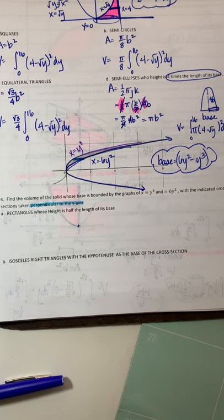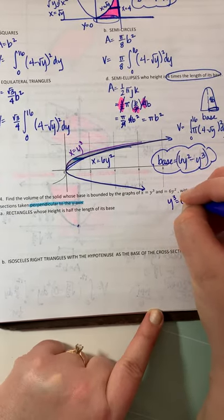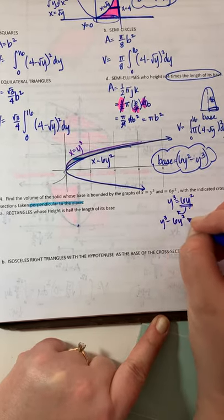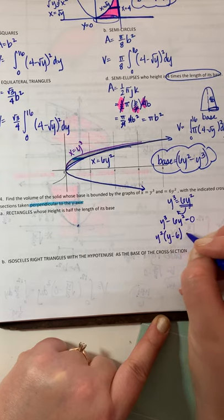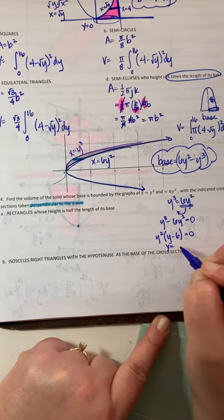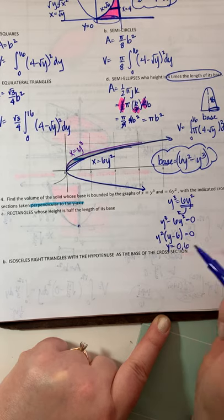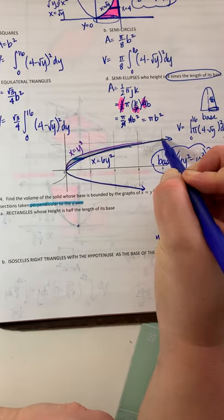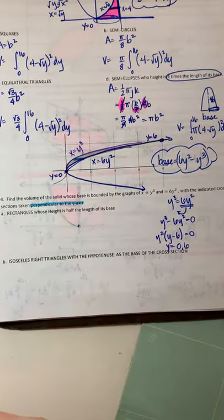Find the intersection points by setting y cubed equal to 6y squared. Bring everything to the left: y cubed minus 6y squared equals 0. Factor out y squared: y squared times (y minus 6) equals 0. They intersect at y equals 0 and y equals 6. So y equals 0 is the lower bound and y equals 6 is the upper bound.